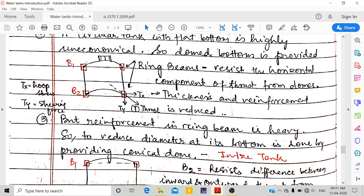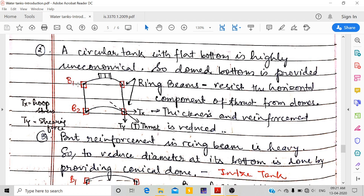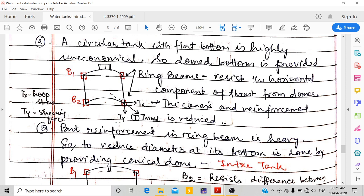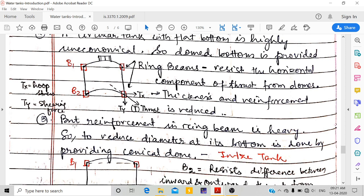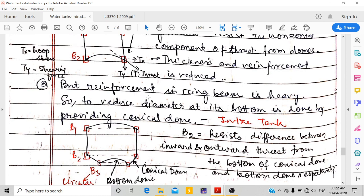This dome is like a spherical shell element. Now if you see here, this is the thrust - Tx is hoop stress, all around horizontally, and this is shearing force Ty downwards. But reinforcement in ring beam is heavy in this case.